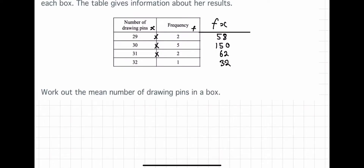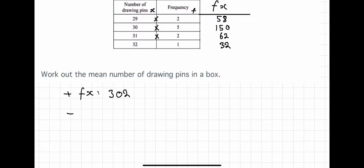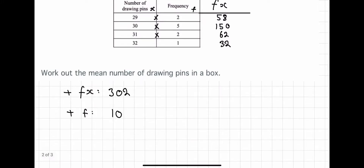Now we add the fx column: 58 plus 150 plus 62 plus 32, which is 302. The total frequency is 2 plus 5 plus 2 plus 1, which is 10. To find the mean, we do the sum of fx — 302 — divided by the total frequency — 10 — which equals 30.2.